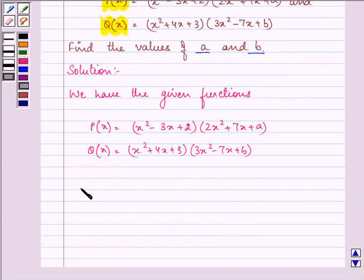Further, we have the HCF of these two polynomials as (x-2)(x+3). So that means (x-2) and (x+3) are the factors of P(x) and Q(x).